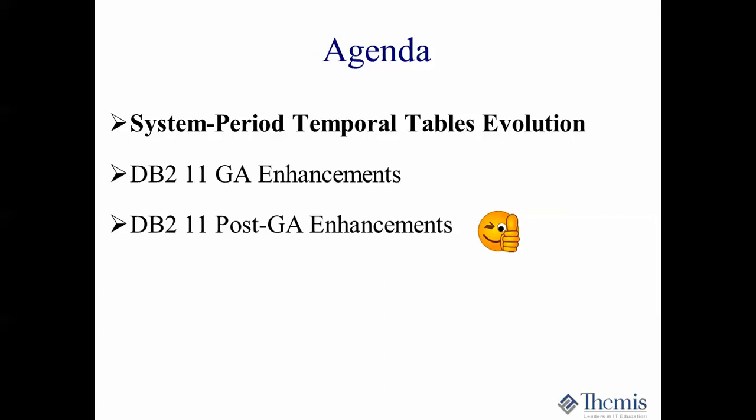So we'll look at the evolution of how we got here — why IBM came out with system period temporal tables and their evolution. Version 11 brought enhancements; they were introduced in version 10. Version 11 GA had some nice enhancements for accessing the data, and post-GA enhancements were retrofitted into version 11. That was really a version 12 feature that we really did like, added later to version 11 through APARs.